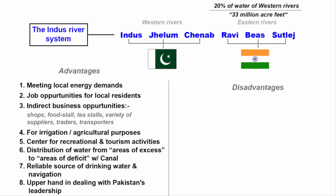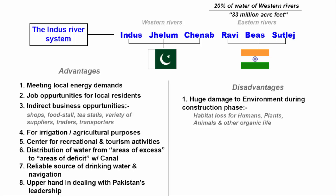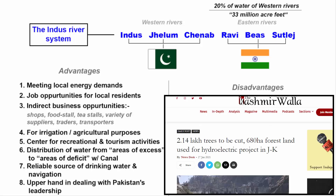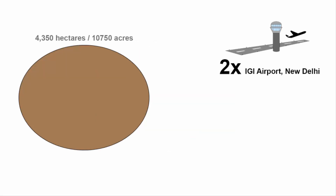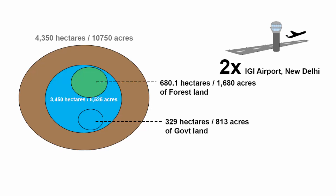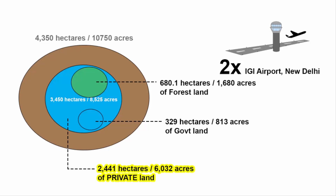On the other side, building a dam causes significant environmental damage during construction, including habitat loss for humans, plants, and animals, as well as water loss through evaporation and seepage, soil erosion, and declining water quality. For this project, the central government has cleared the cutting of 214,000 trees. The total land required is about 4,350 hectares — over twice the size of Delhi airport — of which the submergence area is 3,450 hectares, comprising 329 hectares of government land, 680 hectares of forest land, and 2,441 hectares of private land.